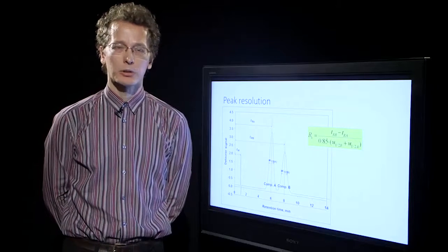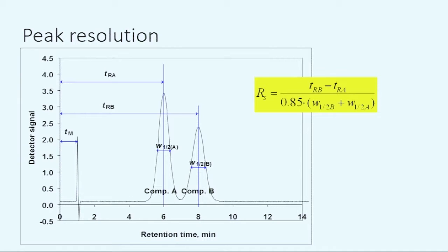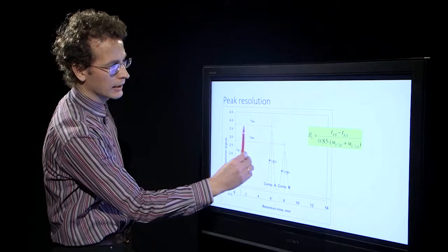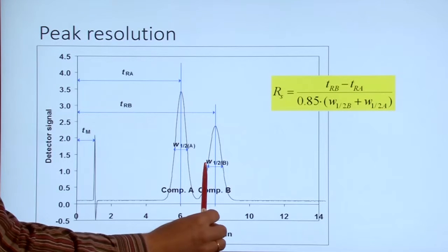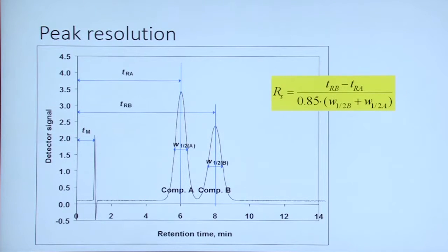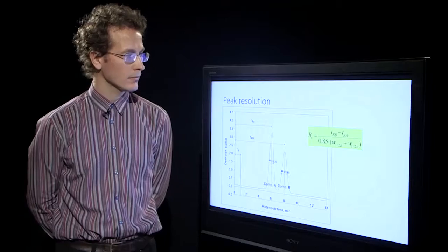Liquid chromatographic selectivity is mostly assessed by means of peak resolution. Peak resolution takes into account the retention times of the analyte and the closest related peak, and also the peak widths at half height. If you are familiar with the selectivity factor, the alpha factor, this is not as good a criterion for selectivity as peak resolution, because the alpha value does not take into account the peak width at half height.